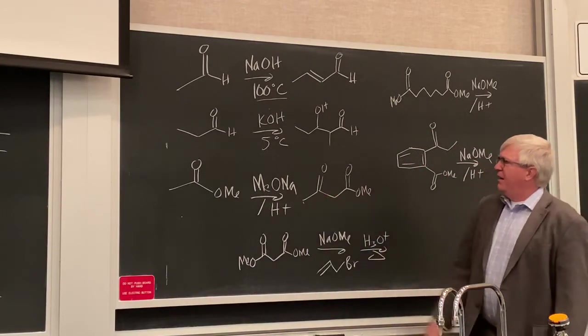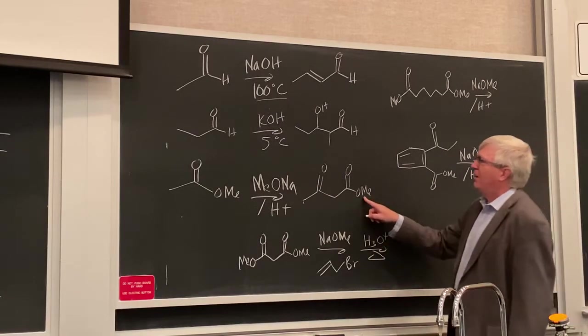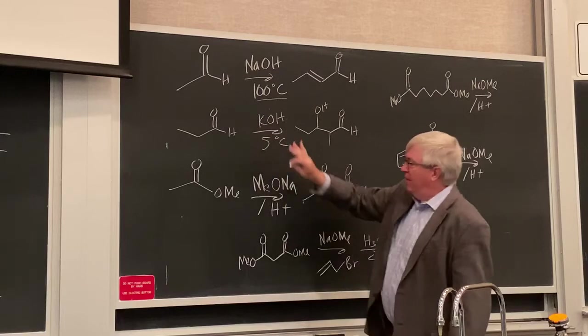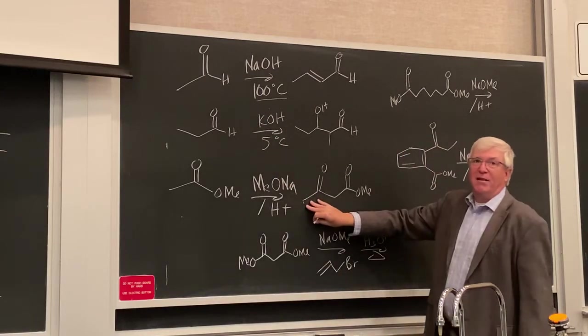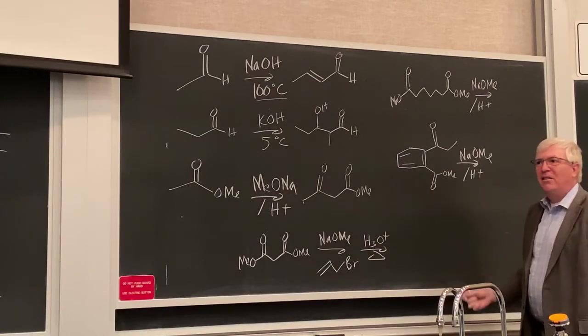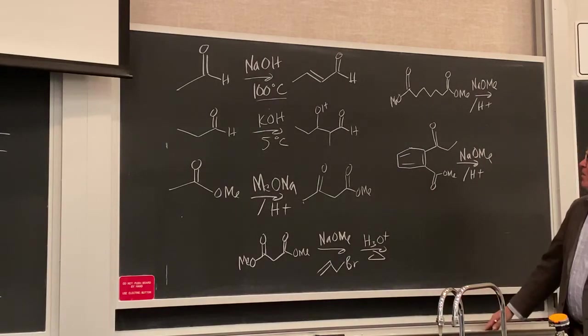It gives a different product, the beta-keto ester product. Esters and aldehydes react differently. This is the aldol domain, this is the Claisen and Dieckmann domain. It comes out of the mechanism. You should be able to see that and use the mechanism to help you keep track of that and remember that.